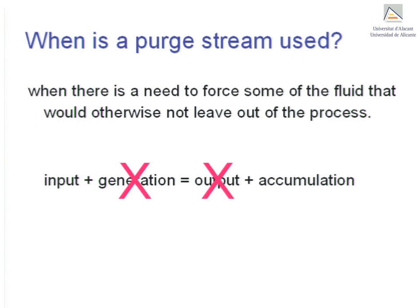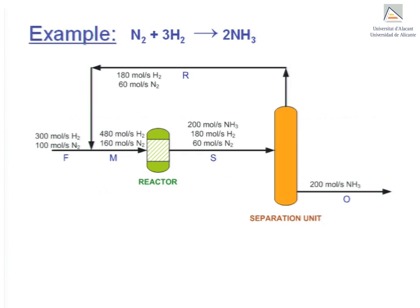A classic example is that of an inert substance entering the process together with the process reactants. Let's now consider a concrete example of this. Imagine first that we have a system operating under steady state where ammonia is formed from pure nitrogen and hydrogen without an inert.